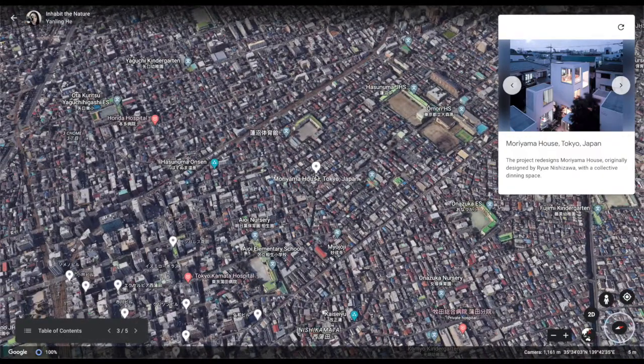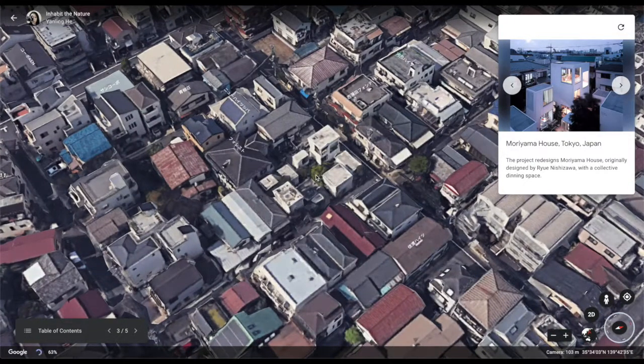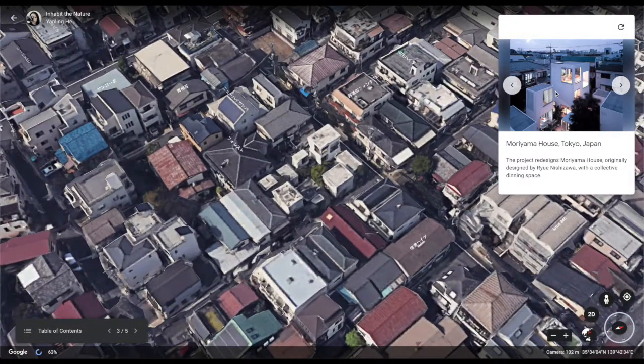The project redesigns Maruyama House with a collective living space and aims to maximize the contacts with nature in Central City.